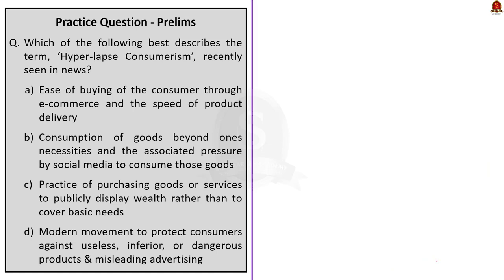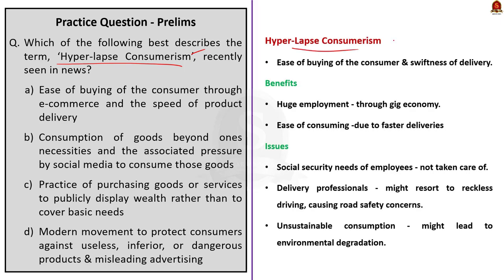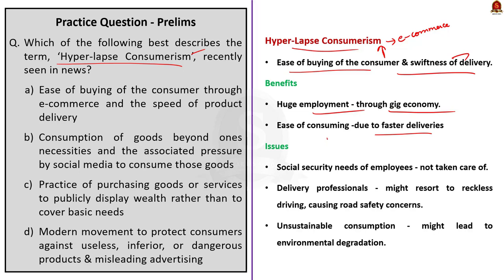The next question asks which option best describes the term 'hyper-impulse consumerism.' First, let us see some points: hyper-impulse consumerism is related to e-commerce. Many of us order products through Amazon or Flipkart without going in person, and the ordered products usually reach us in two or three days. This promotes ease of buying and swiftness of delivery. The benefits associated with hyper-impulse consumerism are: it gives rise to huge employment through the gig economy, and ease of consuming is considerably increased with fast deliveries and impersonal shopping without needing to be physically present.